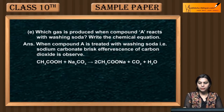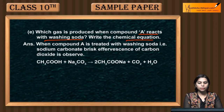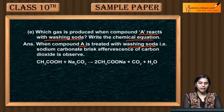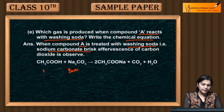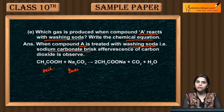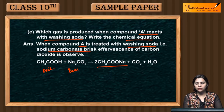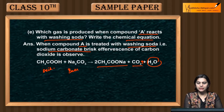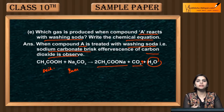Which gas is produced when compound A reacts with washing soda? Write the chemical equation. When compound A, ethanoic acid or acetic acid, is treated with washing soda — that is sodium carbonate — since acetic acid is our acid and sodium carbonate is our base, when we react acid and base, it is a neutralization reaction. We get sodium acetate, plus carbon dioxide is liberated, plus water. So we get a brisk effervescence of carbon dioxide, and you can detect which gas it is — carbon dioxide.